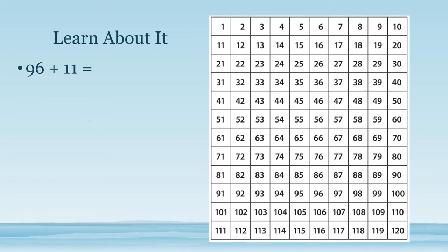Here's another example. I'm going to solve the problem 96 plus 11 by counting by 1's. Here's 96 — let's count on by 1's: 1, 2, 3, 4, 5, 6, 7, 8, 9, 10, 11. What patterns do you notice? Again, instead of being directly below our first addend on the 120 chart, it's one space after on the next row. Since we're adding 11 and 11 is one more than 10, we will be one space after on the line below — we added 10 and then one more. So 96 plus 11 equals 107.